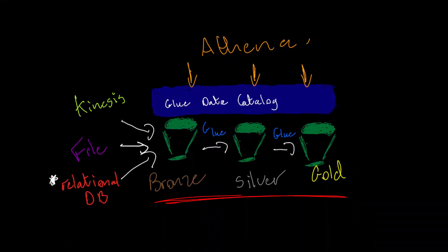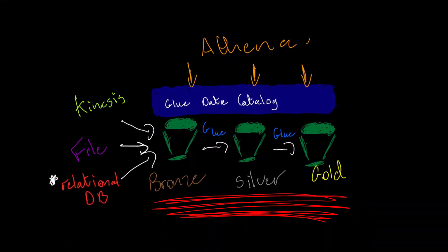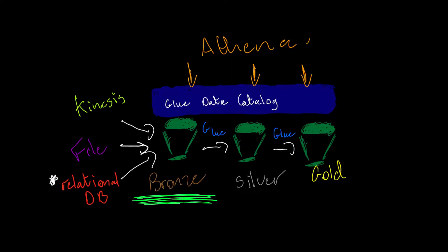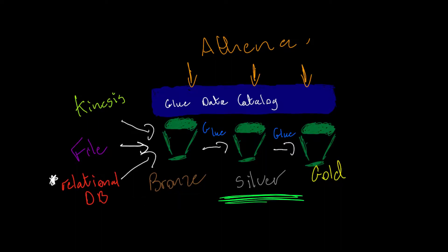Just a bit of theory before we go any further. Bronze, silver, and gold represents an architecture pattern in data lakes. Bronze traditionally is the data that has been ingested and untouched. Silver sees that some of the data has been through a verification process, possibly a change of format.